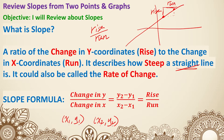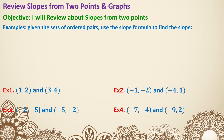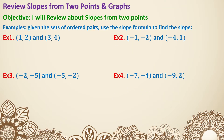So it's the change in y over the change in x. On the top, I'm using the second y coordinate subtracting the first y coordinate, and then on the bottom, the change in x — I'm using the second x coordinate subtracting the first x coordinate. That is also the same as rise over run. So typically when you see two points, we just need to identify the first and second point, label them, and go from there. The slope formula is y2 minus y1 over x2 minus x1.